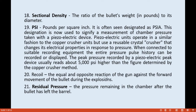Recoil is the action of the gun against the forward movement of the bullet during the explosion — the gun goes forward, the shooter feels it backward. Residual pressure is the pressure remaining in the chamber after the bullet has left the barrel — the powder residue left in the chamber, such as black powder residue.